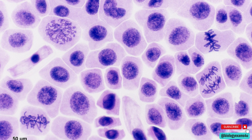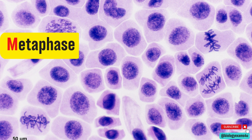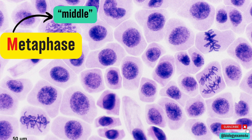Let's begin with the easy ones. The easiest stage to identify is the metaphase. Remember, M stands for middle. Now look at the cells that have chromosomes or chromosomal strands lined up in the middle or center of the cell. Here you can see that chromosomes are aligned at the center — this is called a metaphase plate.